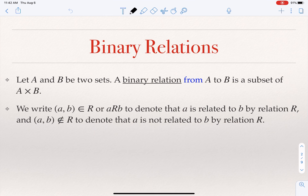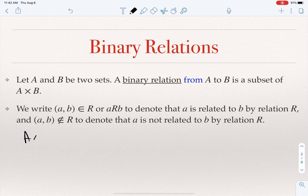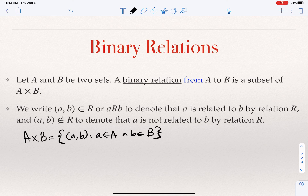So what is a binary relation? A binary relation is a relation defined on two sets. A binary relation from set A to set B is a subset of the Cartesian product of A times B. So it's a very simple definition. If you have a set A and a set B, compute their Cartesian product, which is the set of all pairs with one element from A and one element from B. If you take any subset of that, then you have a binary relation.